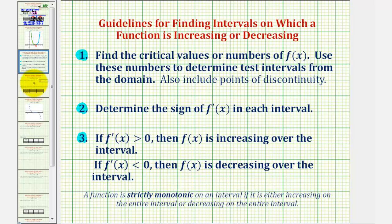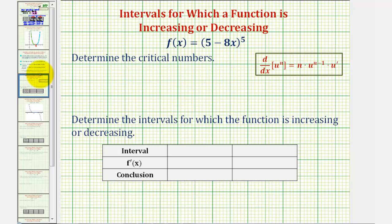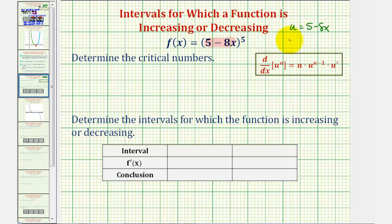Going back to our example, the first step is to find the critical numbers by determining where the derivative function is equal to zero or undefined. Notice we have a composite function where the inner function is five minus eight x. So if we let u equal five minus eight x, then u prime would be equal to negative eight. We can write the given function as u to the fifth.